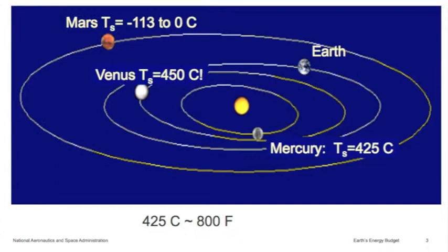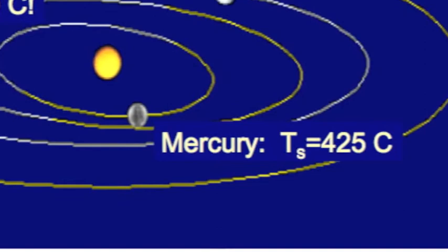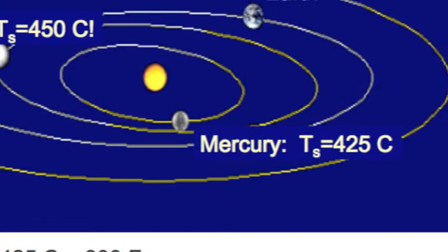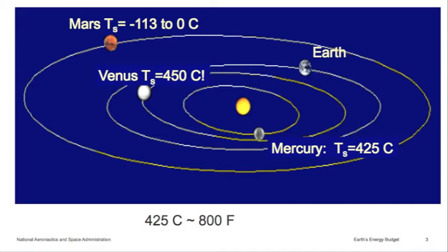And if you look at Mercury, which is the first planet from the sun, its approximate average surface temperature is 425 Celsius, which is equivalent to 800 Fahrenheit. And for anybody in the audience who's used to baking cookies or anything, you probably realize that 800 Fahrenheit is way higher than your oven will actually go. So that's a really, really hot surface.